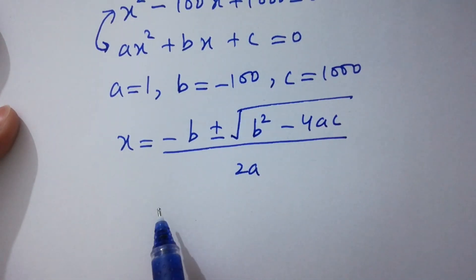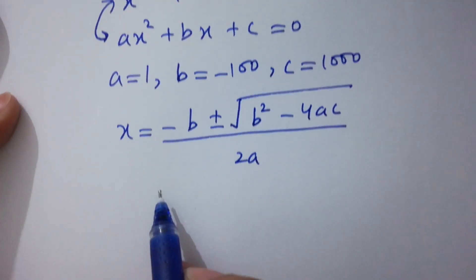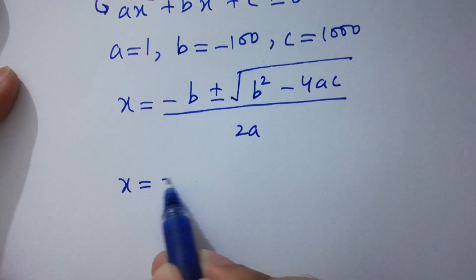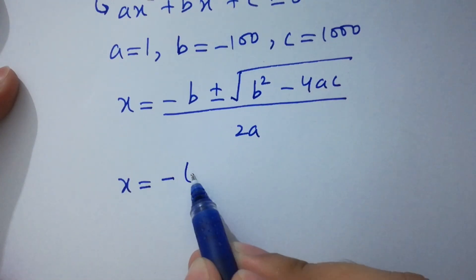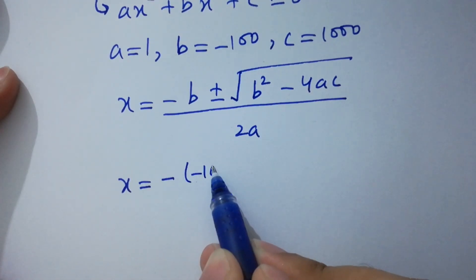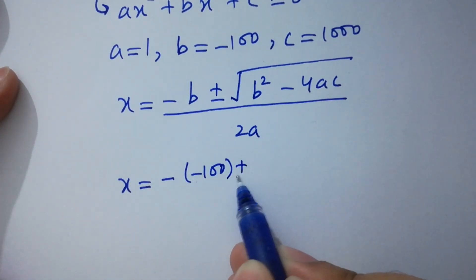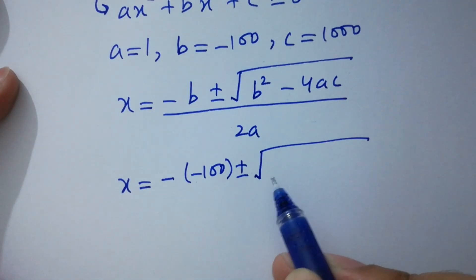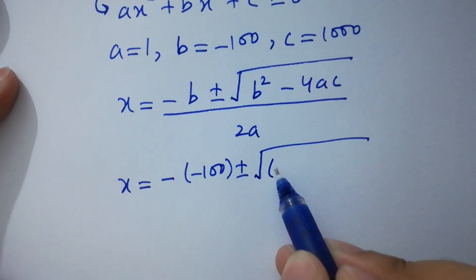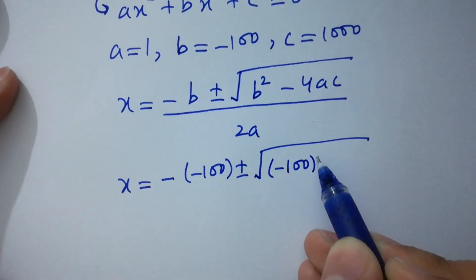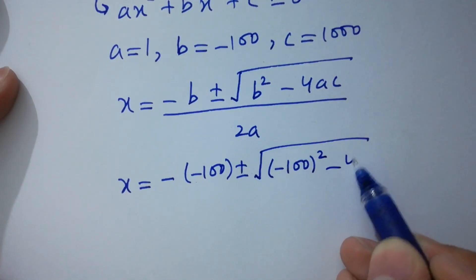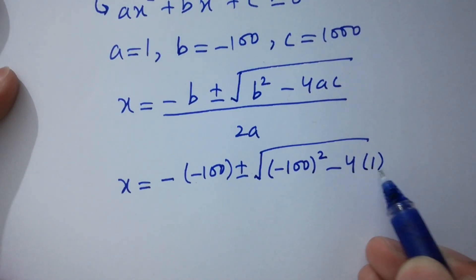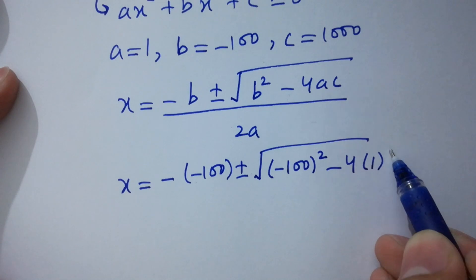Putting the values of a, b, and c: x equals minus (minus 100) plus or minus square root of (100 squared minus 4 times 1 times 1000) over 2 times 1.